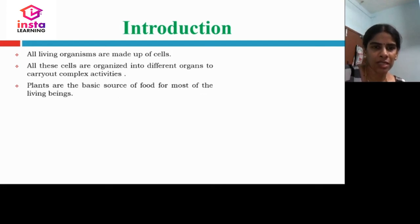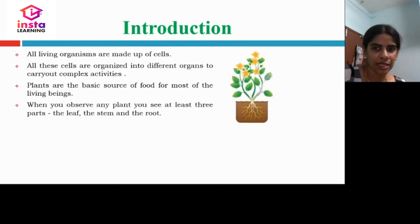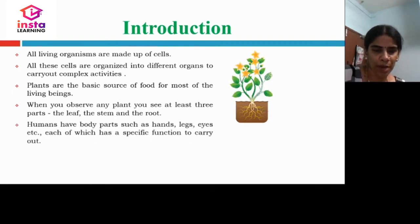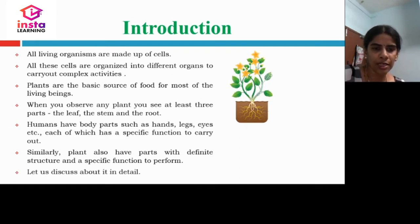Plants are the basic source of food for most of the living beings. When you observe any plant, you see at least three parts: the leaf, the stem, and the root. Humans also have body parts such as hands, legs, eyes, etc., each of which has a specific function to carry out. Similarly, plants also have parts with definite structure and a specific function to perform.